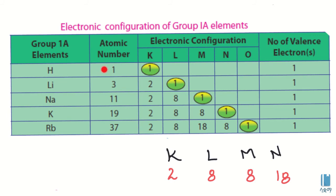If you have a group of elements, there will be another electron in the outer shell. Looking at the electron configuration, you need to identify the band group. The valence electron is the outermost electron, and it determines the group in the periodic table.